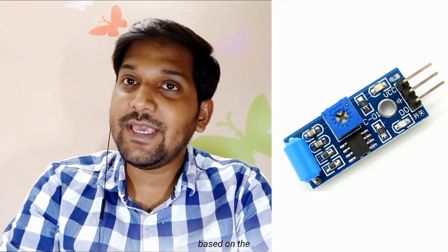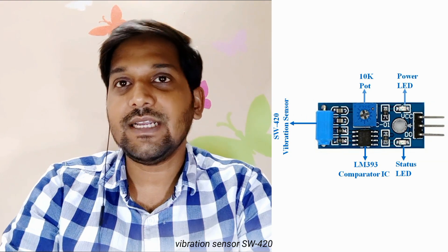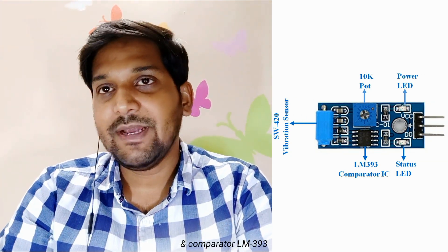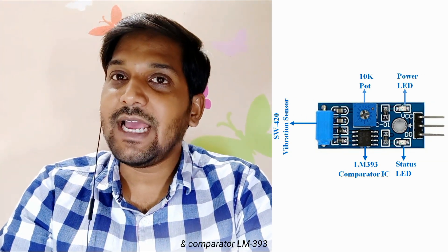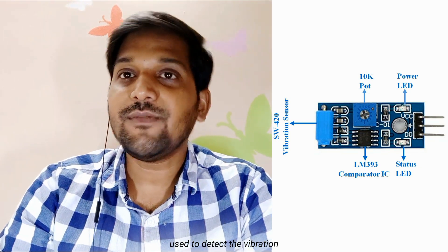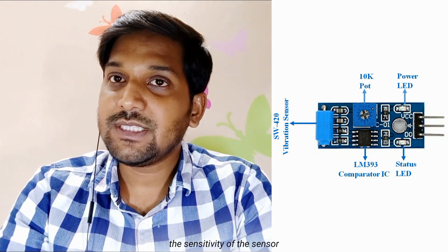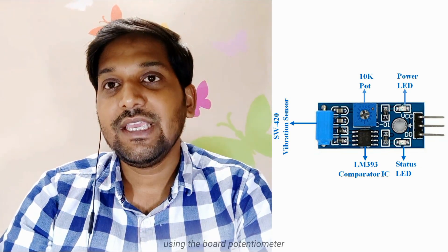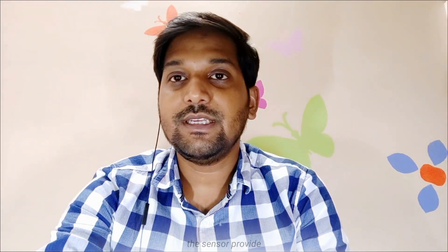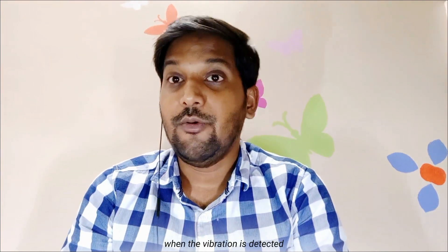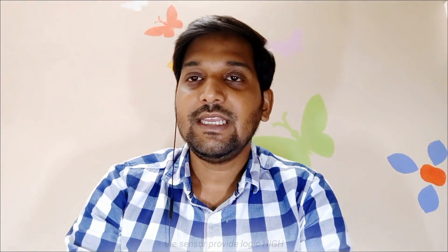The first component on our list, the motion sensor. The vibration sensor module based on the vibration sensor SW420 and comparator LM393 used to detect the vibration. The sensitivity of the sensor can be easily adjusted using the on board potentiometer. During no vibration, the sensor provides logic low. When the vibration is detected, the sensor provides logic high.